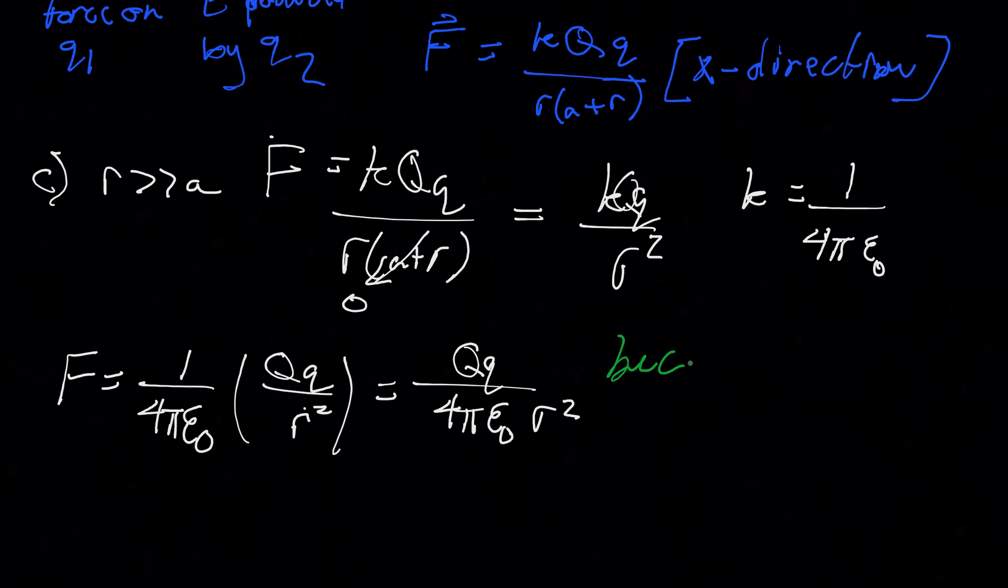And so, this result is obtained because we can make the assumption that a is negligible. So, because a is negligible, when r is much, much greater than a. And that makes sense if we put some numbers to it.